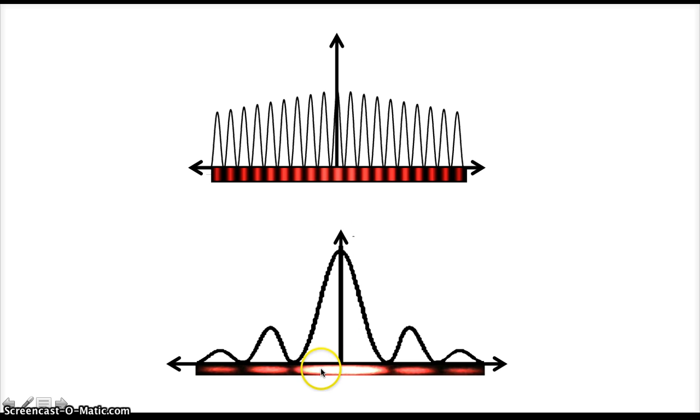The final comparison is about the size of that central bright spot. Down here, in the single-slit, the central bright spot is twice as wide as the fringes. But up here, the central bright spot, if you look at the graph on top, the intensity graph, the central bright spot is equally wide as all of the other fringes. So those are the comparisons we can make.